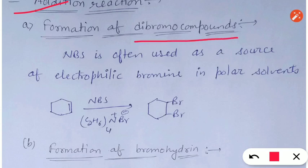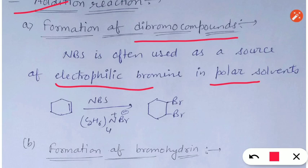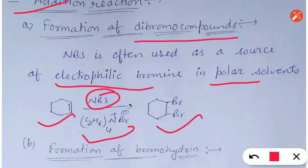The other important reaction of N-Bromosuccinimide involves addition reactions. First, formation of dibromo compounds, meaning addition of bromine across a double bond. When N-Bromosuccinimide is used in a polar solvent it acts as a source of electrophilic bromine. Cyclohexene reacts with N-Bromosuccinimide in a polar solvent such as tetraalkyl ammonium bromide to form 1,2-dibromocyclohexane, proceeding through a bromine cation intermediate.